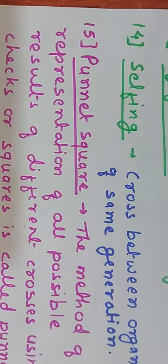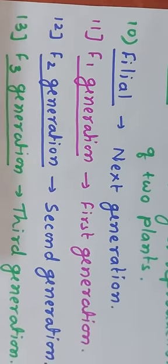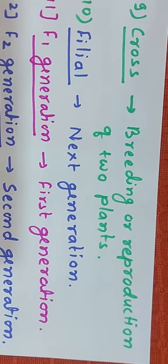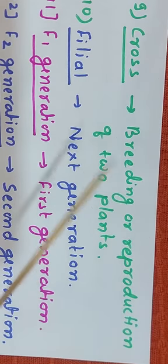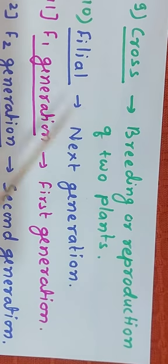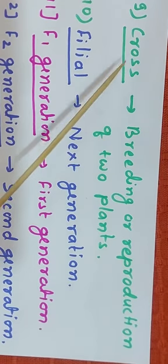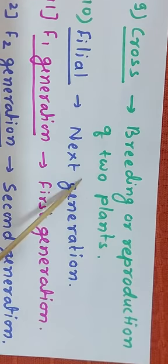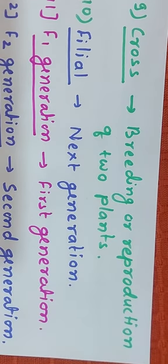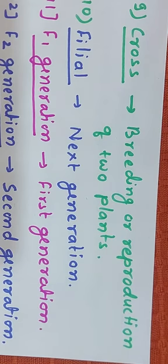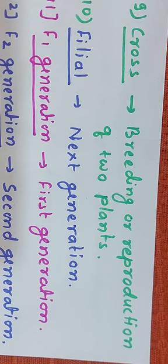Before this we covered phenotype and genotype. Now we look at terminology used in Mendel's experiments. When we say a tall plant is crossed with a dwarf plant, cross means the breeding or reproduction of two plants. Next is filial: what is the meaning of filial? Filial means the next generation.